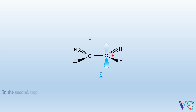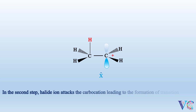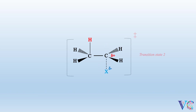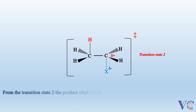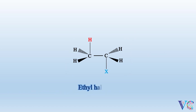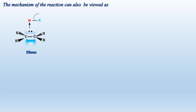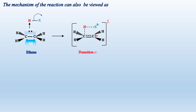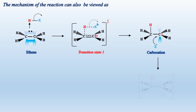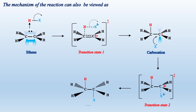In the second step, the halide ion attacks the carbocation, leading to the formation of transition state 2. From transition state 2, the product ethyl halide is formed. The mechanism of the reaction can also be viewed as an energy profile diagram of the addition of H-X to alkenes.